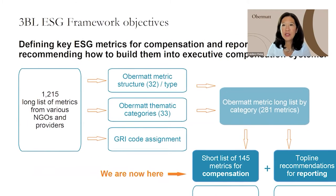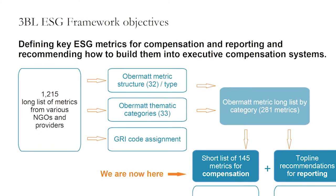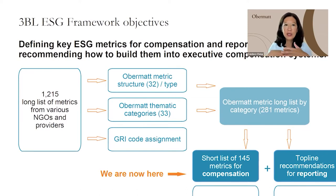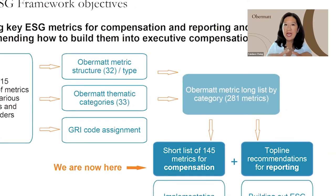With these 1,200-plus metrics accumulated from various different providers, we did quite a lot of categorization. The goal for us was really to try to create a structure to make it easier to navigate and identify which metrics are the most important for you — from a compensation perspective but also from a reporting perspective, so that you can come to a more robust reporting practice. There were really a lot of ways that we looked at this.